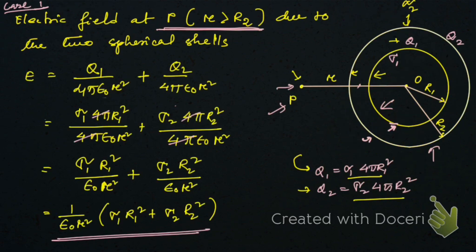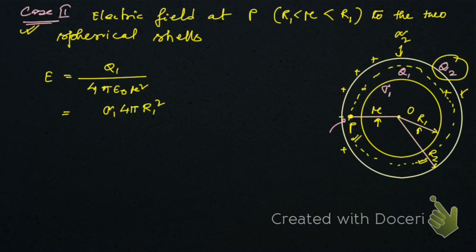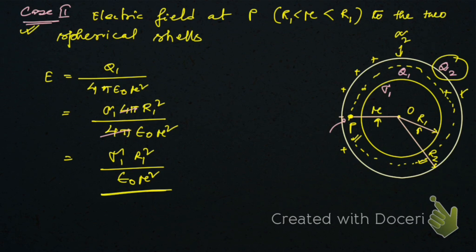In Case 2, the q₂ term is zero. Therefore, the electric field at P is E = q₁ / (4πε₀r²). Substituting q₁ = σ₁ × 4πr₁² and cancelling 4π, we get E = σ₁r₁² / (ε₀r²). This is the result for Case 2, when P lies between the two concentric spherical shells.